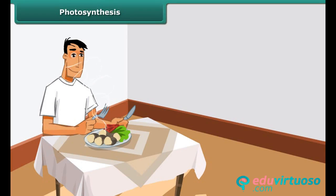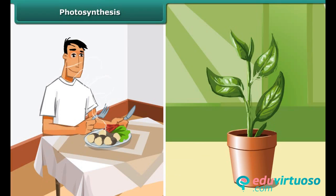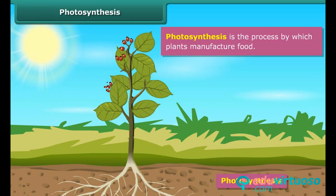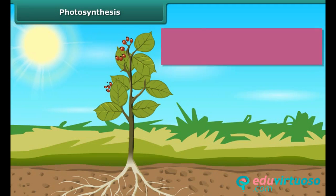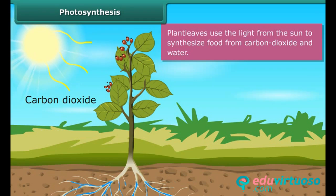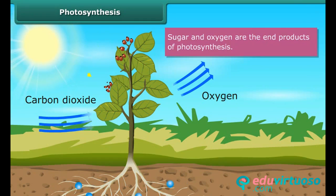Just as human beings need food to survive, plants also require food to live. Photosynthesis is the process by which plants manufacture food. The word photosynthesis is derived from two words: photo, which means light, and synthesis, which means preparation. Thus, photosynthesis means producing with the help of light. In this process, plant leaves use the light from the sun to synthesize food from carbon dioxide and water. Sugar and oxygen are the end products of photosynthesis.